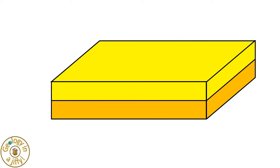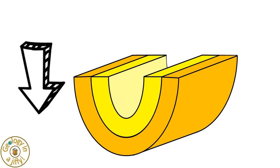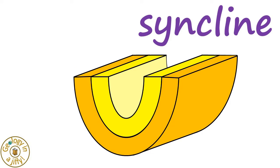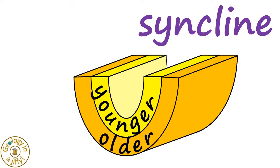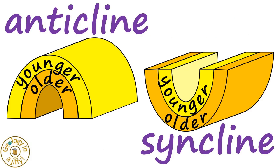Alternatively, if we compress the same flat layers but they bend downward, then a syncline forms, with the younger layers in the core of the fold surrounded by the older layers to the outside of the fold. Look at the differences.